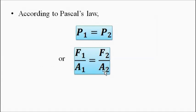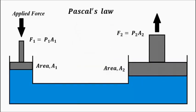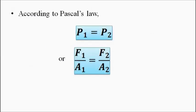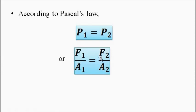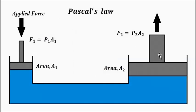If we rearrange the equation, F2 = (A2 / A1) × F1. Since the surface area A2 on the ram side is naturally larger than A1, A2/A1 is greater than one. Therefore, the upward lifting force F2 will be much greater than the applied downward force F1. This is the whole concept of Pascal's Law and how a basic hydraulic machine works.